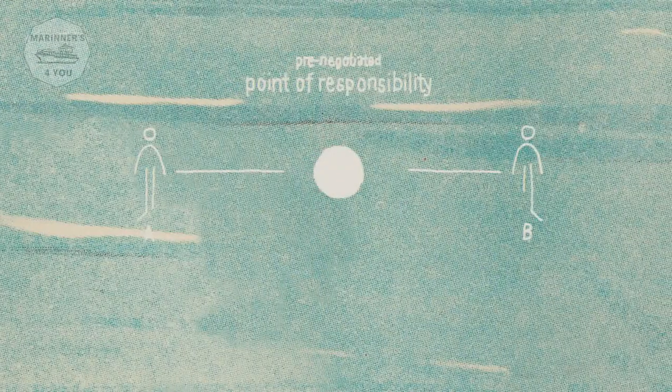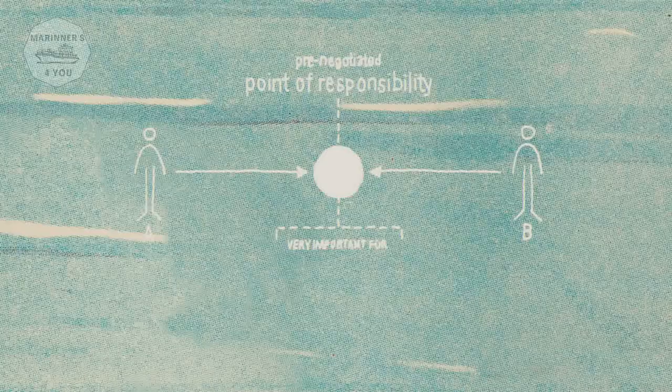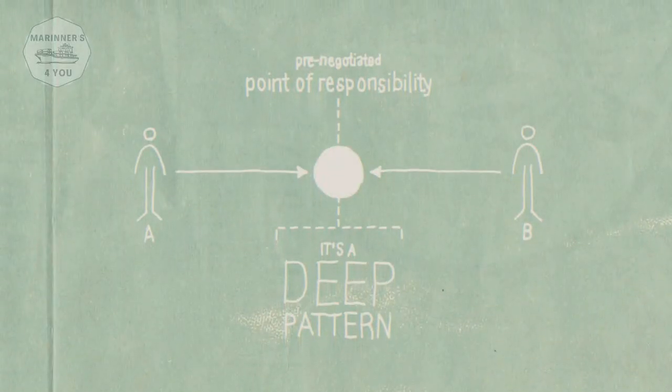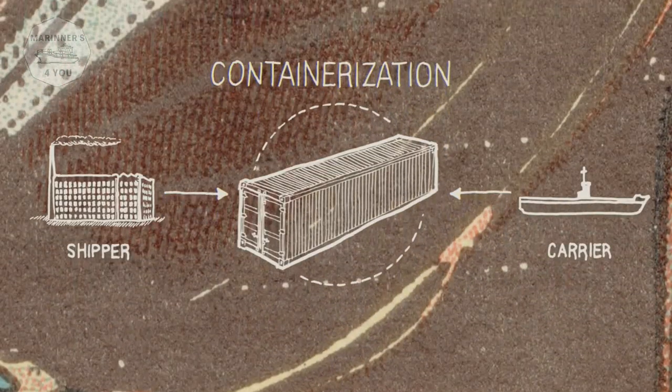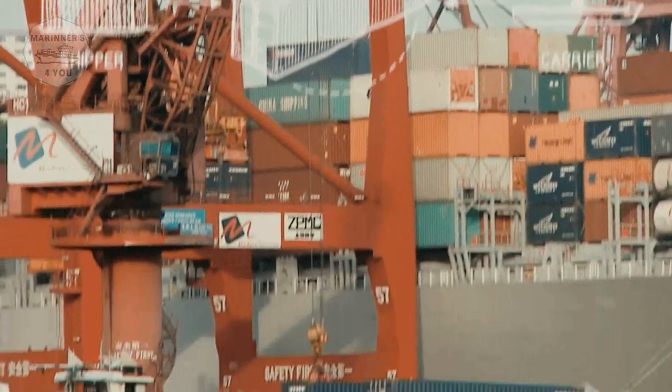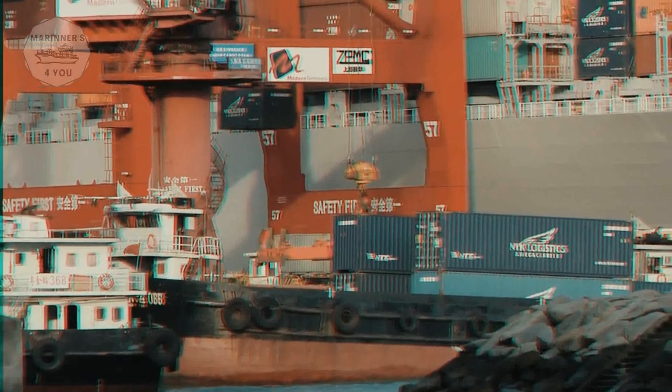This notion of having bright lines and pre-negotiated points of responsibility is very important for large, stable, scalable systems. It's a deep pattern, and containerization is simply the example of that pattern applied to the shipping industry. The reason we like it is because we need — but are currently lacking — the analogous negotiation of a point of responsibility in the storage and transport of information.